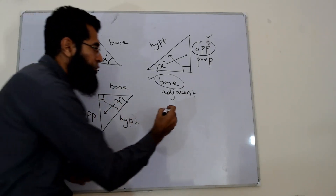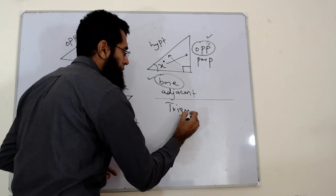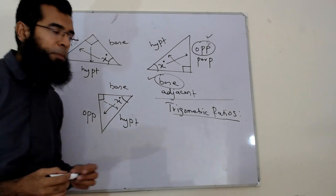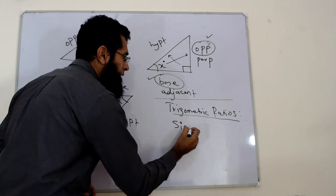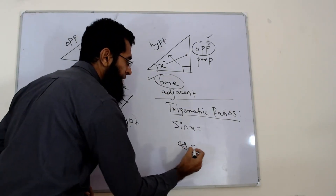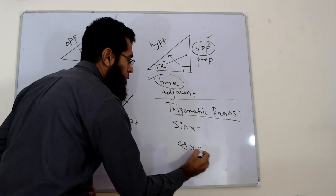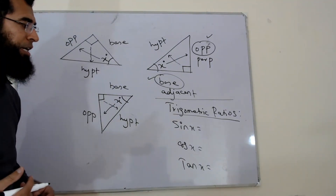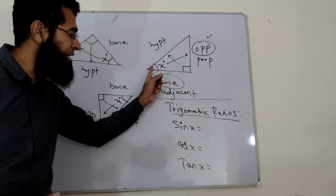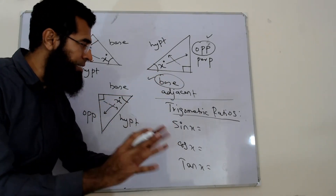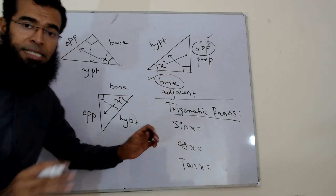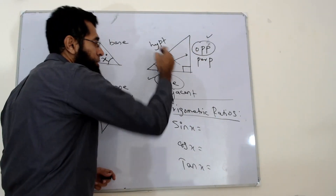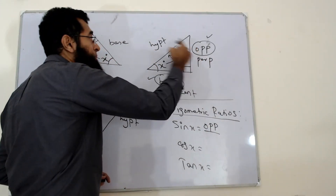Now the second step: trigonometric ratios. What are trigonometric ratios? Trigonometric ratios are sin of the angle, cos of the angle, and tan of the angle — sin x, cos x, or tan x. These are the three trigonometric ratios you will frequently use. Sin x is the connection between two lengths in a right angle triangle. Sin x is the ratio of the opposite side to the hypotenuse — opposite over hypotenuse.